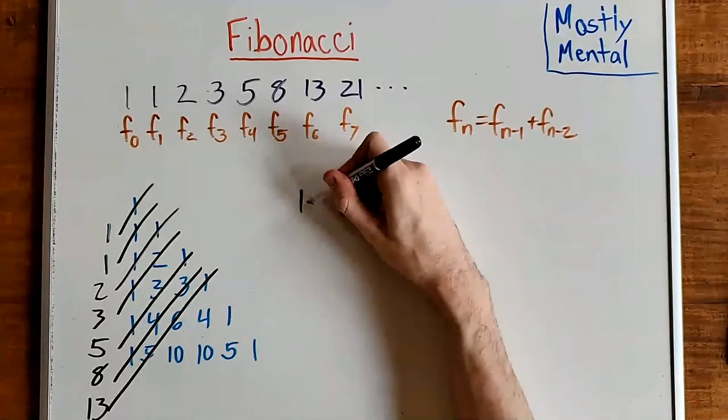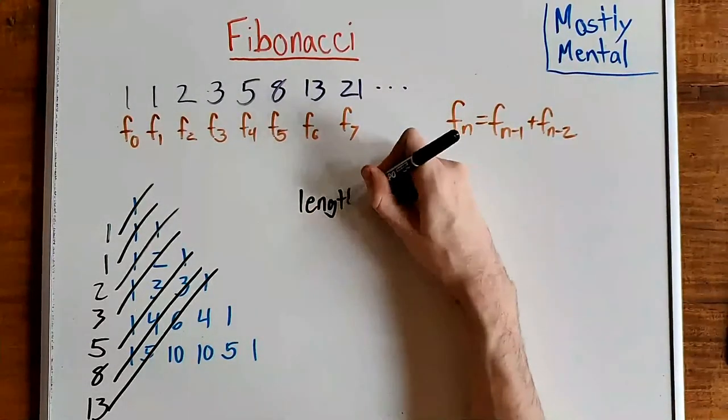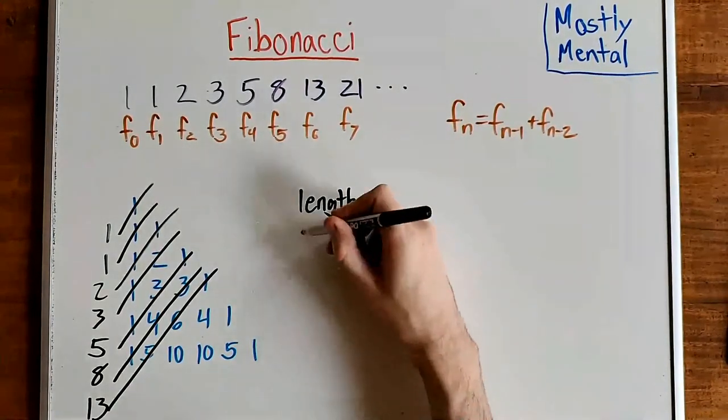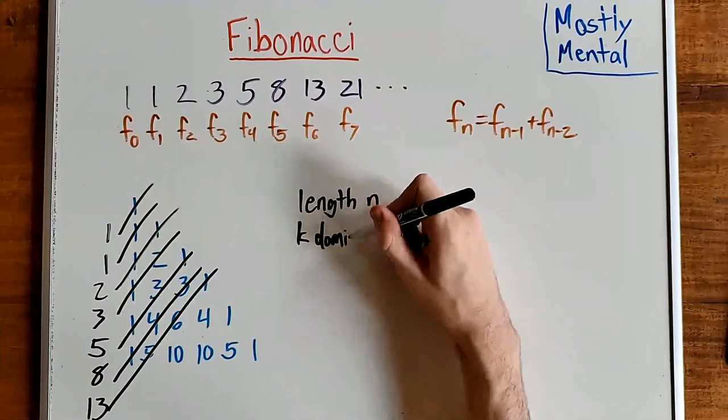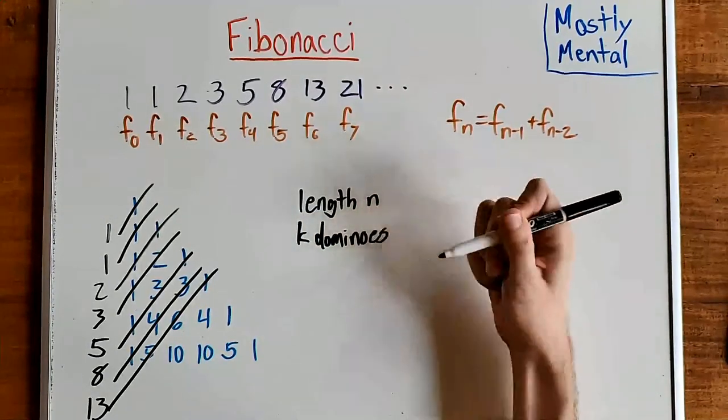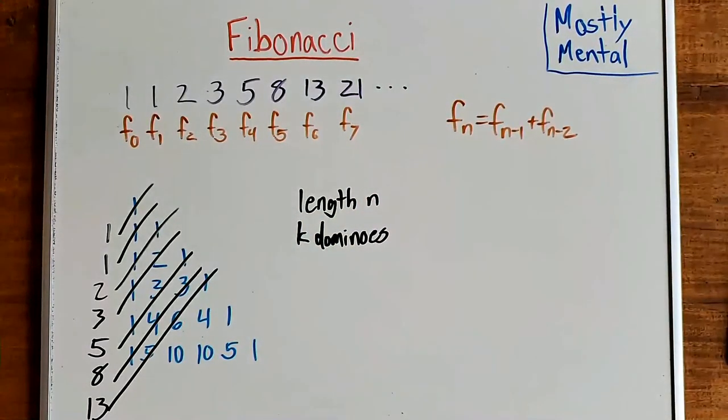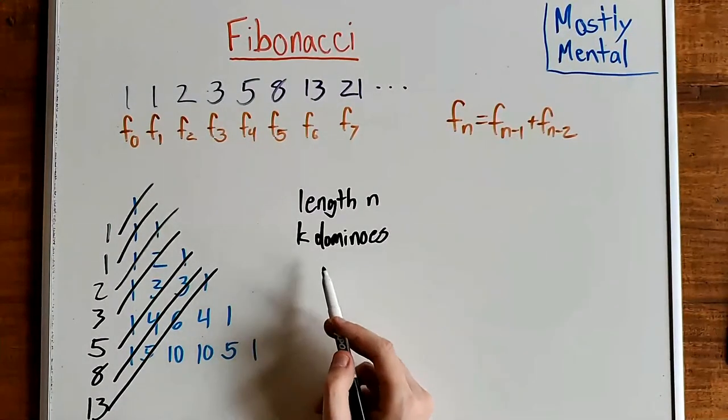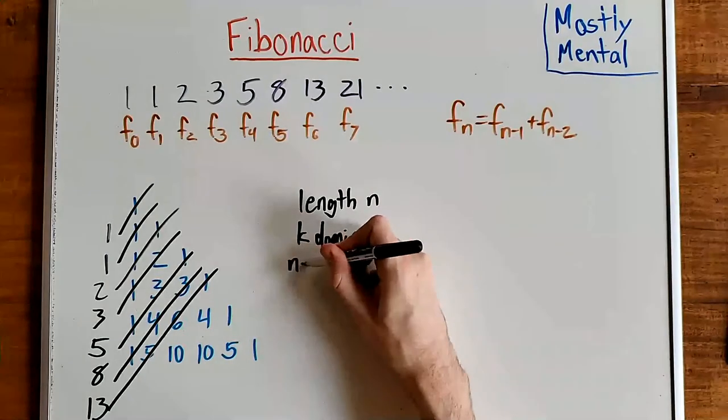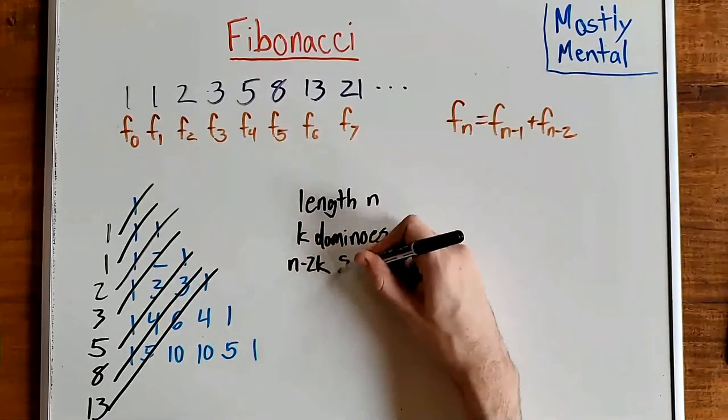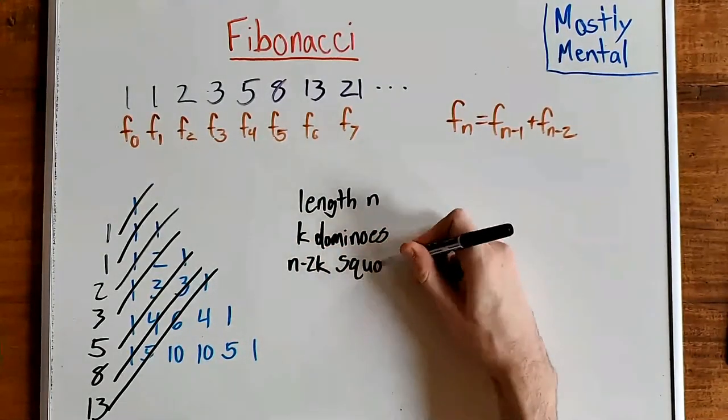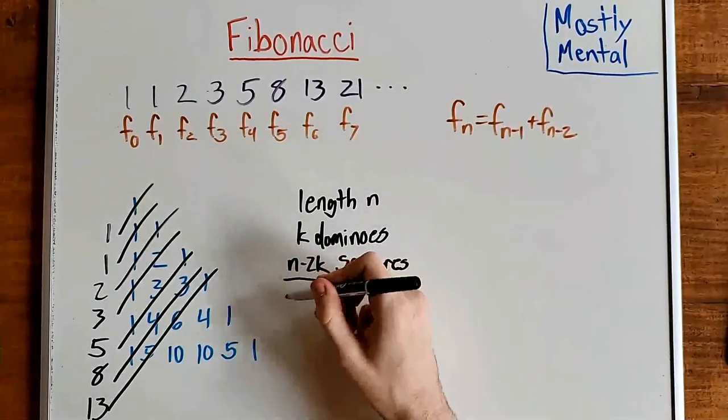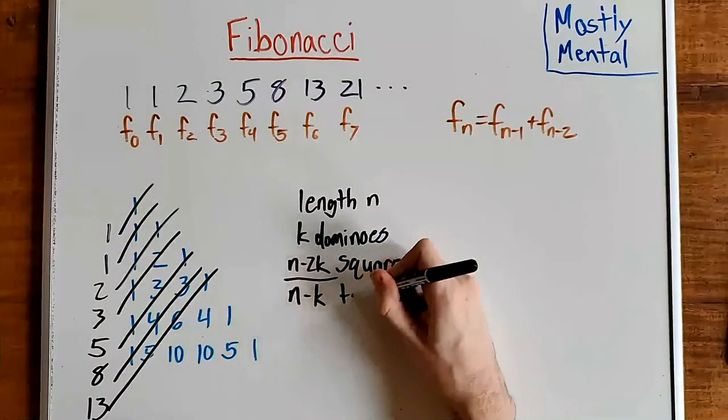Well, consider the tilings of length n. How many of them contain k dominoes? Well, if a tiling contains k dominoes, then that means it's using 2k spaces. And so we have n minus 2k left for the squares. And so in total, we have n minus k tiles.